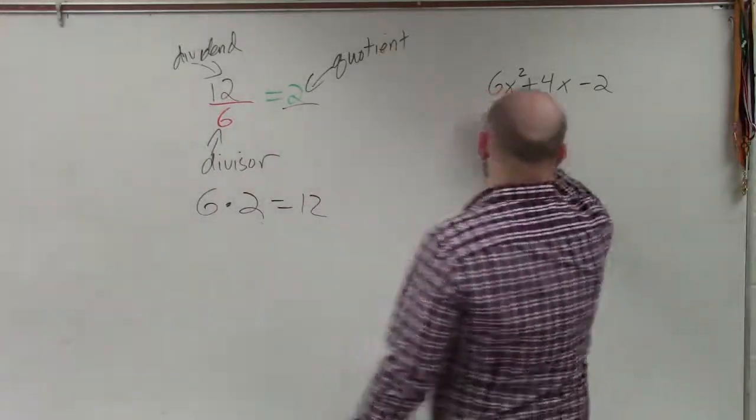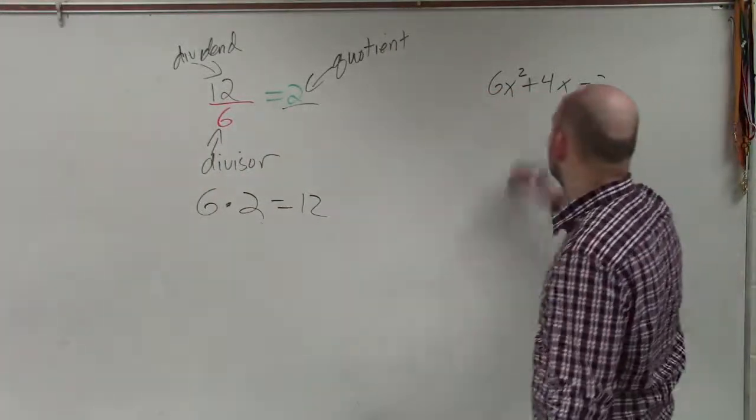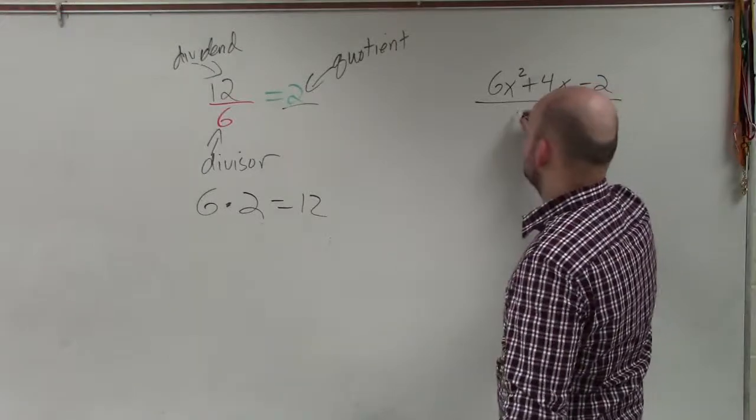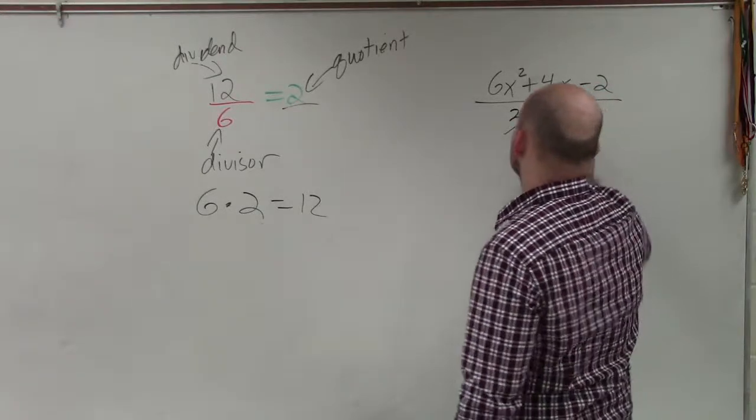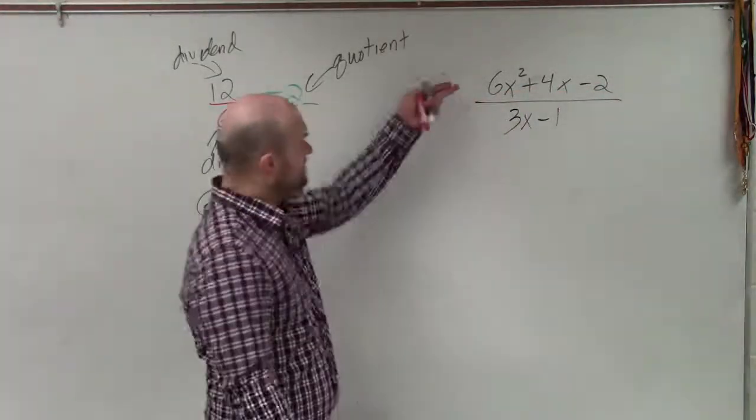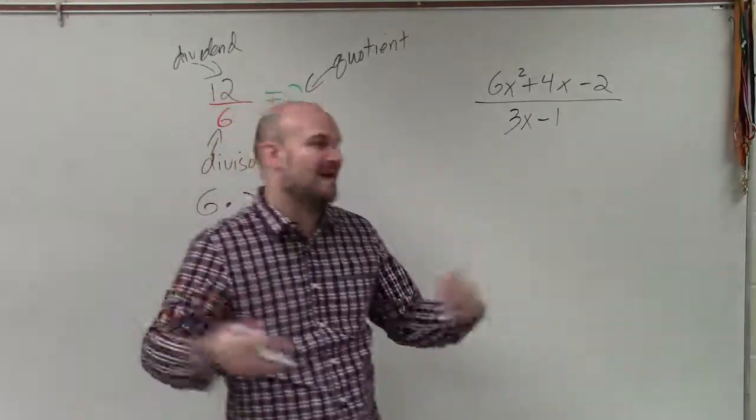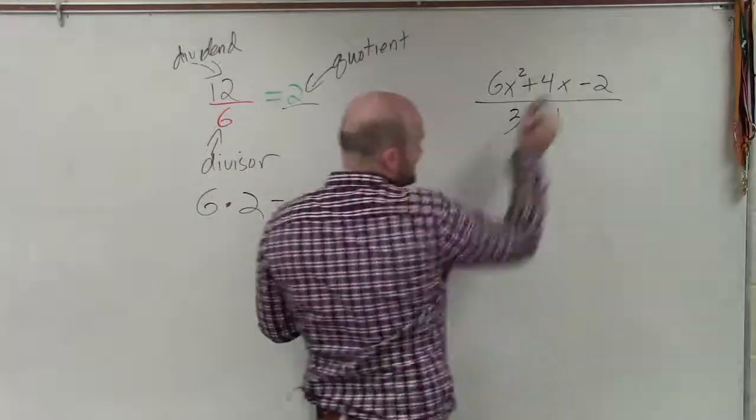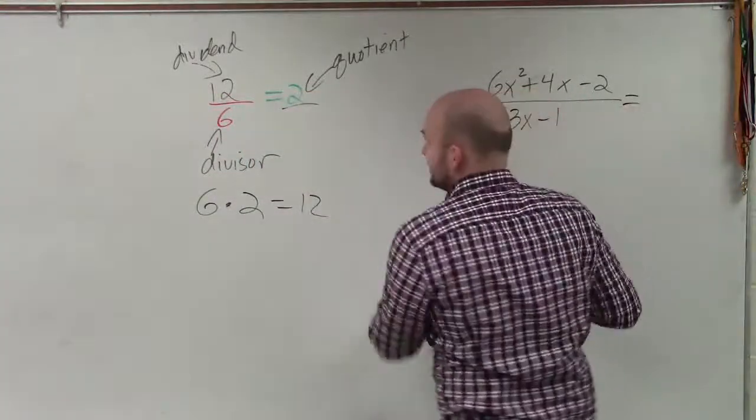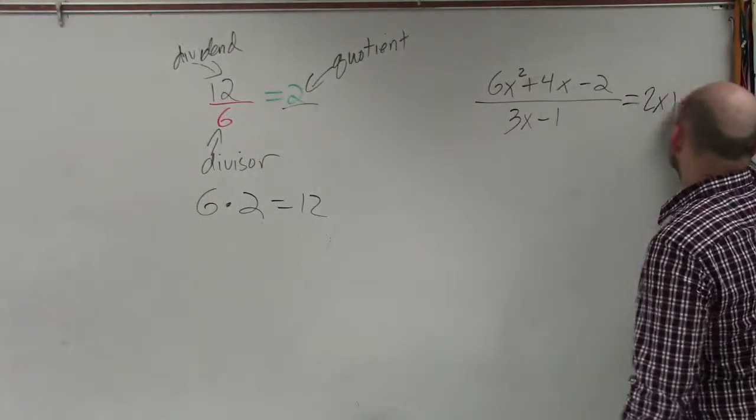When I'm looking at a problem like this, I have 6x² + 4x - 2, and I want to divide this by 3x - 1. This is my dividend, this is my divisor. When I divide this into that, I get this quotient, which would be 2x + 2.